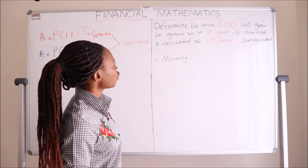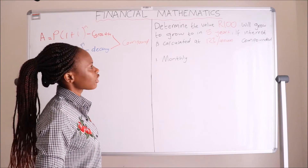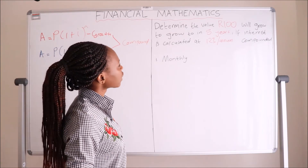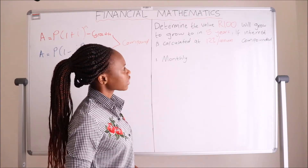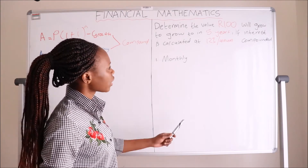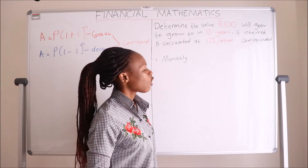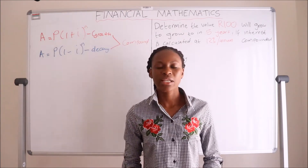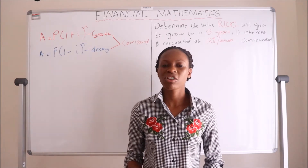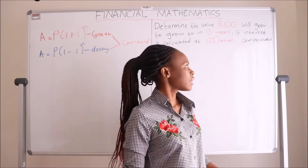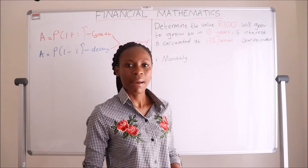So here we have a question which says: determine the value that 100 rand will grow to in five years if the interest rate is calculated at 12% per annum compounded monthly. In this case we have an interest rate of 12% per annum but they say it should be compounded monthly.